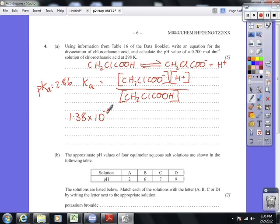Now, because these two components here, the hydrogen ion and the chloroethanoate ion, both came from the same original molecule, their concentrations are going to be equal. So on the top line here, we're going to write H plus squared.